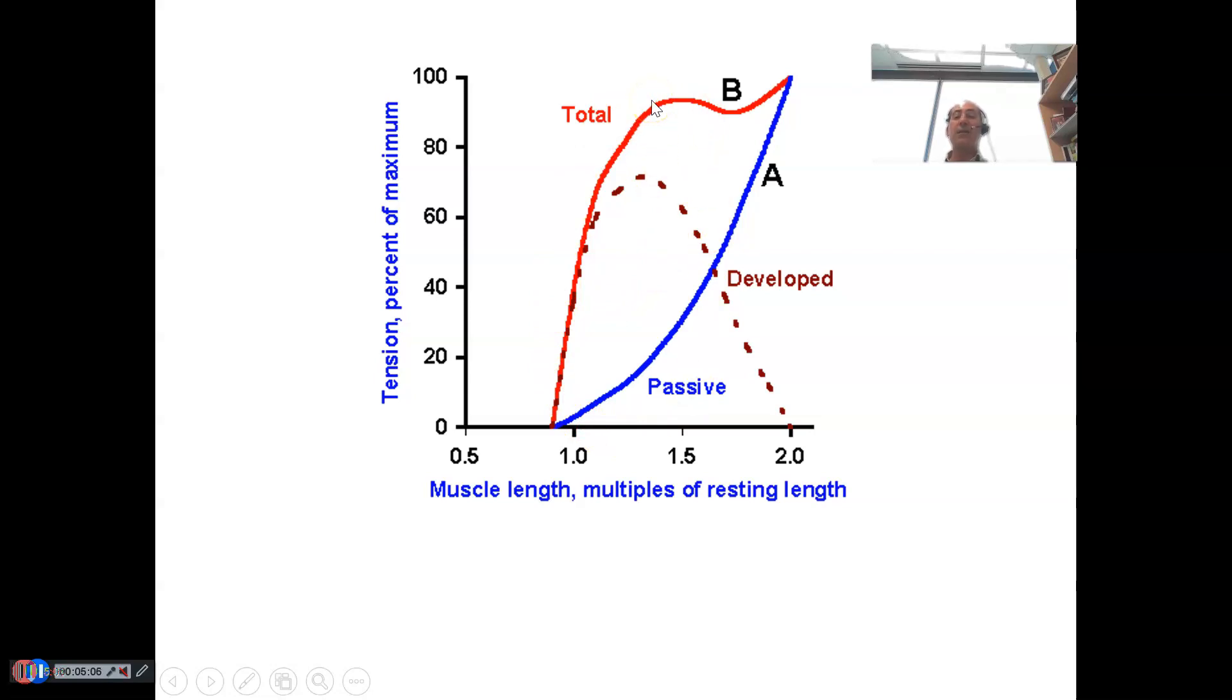So what this shows is that the sweet spot for producing the most force, remember the resting length is about 1 to 110%, 100 to 110%, which is about here. In this graph, it's a little bit over, it's off by a little bit. It shows it about 120, 130, but it's actually off a little bit. That's okay. It's roughly about 110% is where this peak should be. And at this point, if you draw a straight line over to the tension curve, you get to be about 75% of total as a percentage of your total max.